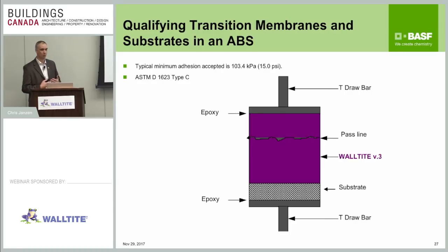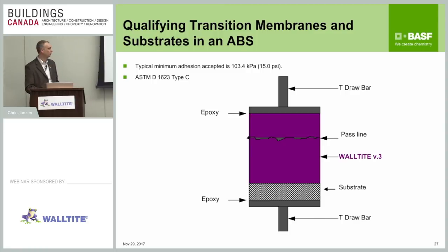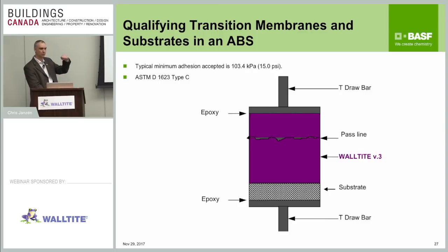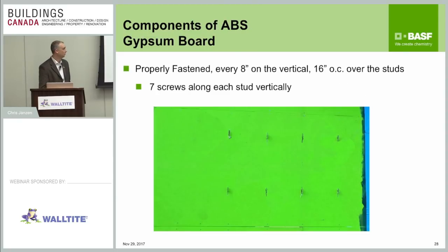As a manufacturer, when qualifying different components of an air barrier system beyond the ULC S742 test, we do an ASTM C1623 pull test — we take two bars and pull them apart. We have a substrate like plywood or exterior glass-mat gypsum, put a transition membrane on there, then two passes of spray foam to make sure we have a pass line. We're looking for an adhesion value of at least 15 PSI. That 15 PSI adhesion in the ULC S742 testing equates to what we get in this pull test, and 15 PSI is a pretty strong number.